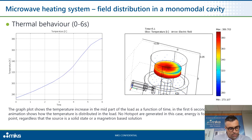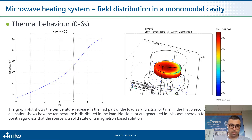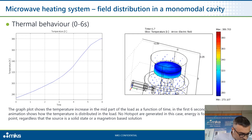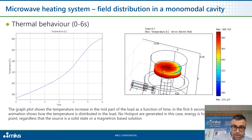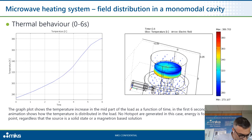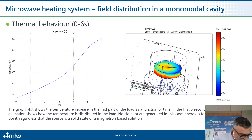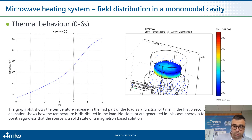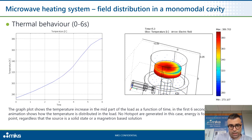Here you see instead a typical monomodal cavity, which is focused on a specific product. In this case, no hotspots are generated and energy is focused in one specific point. The graph shows a temperature increase in the mid part of the load as a function of time over 6 seconds of heating. The animation shows how the temperature is distributed in the load — no hotspots are generated. This is regardless of whether the source is a solid state or a magnetron-based solution; it is linked to the cavity itself.